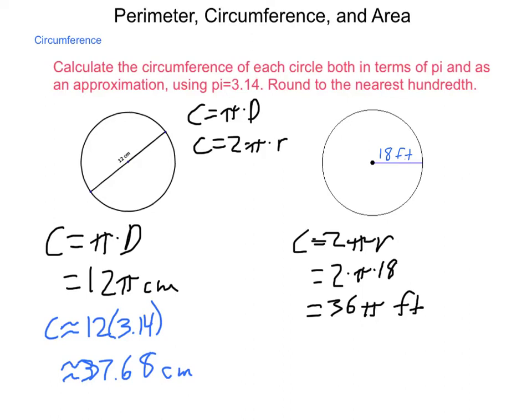Next, we're going to want to know what that is as a decimal approximation. And, doing the same thing, C is approximately equal to 36 times the 3.14 value for pi. So, that means this is approximately equal to 113.04 feet.